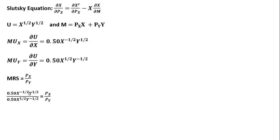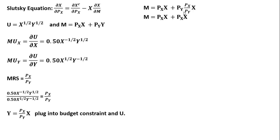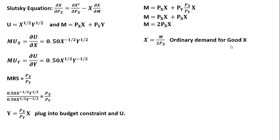We're going to solve this for y, and it simplifies down to a nice result. We'll plug this result into the budget constraint. Where we see y, we plug in that result and simplify for x. The price of good y terms cancel, and solving for x, we get the ordinary demand for good x.